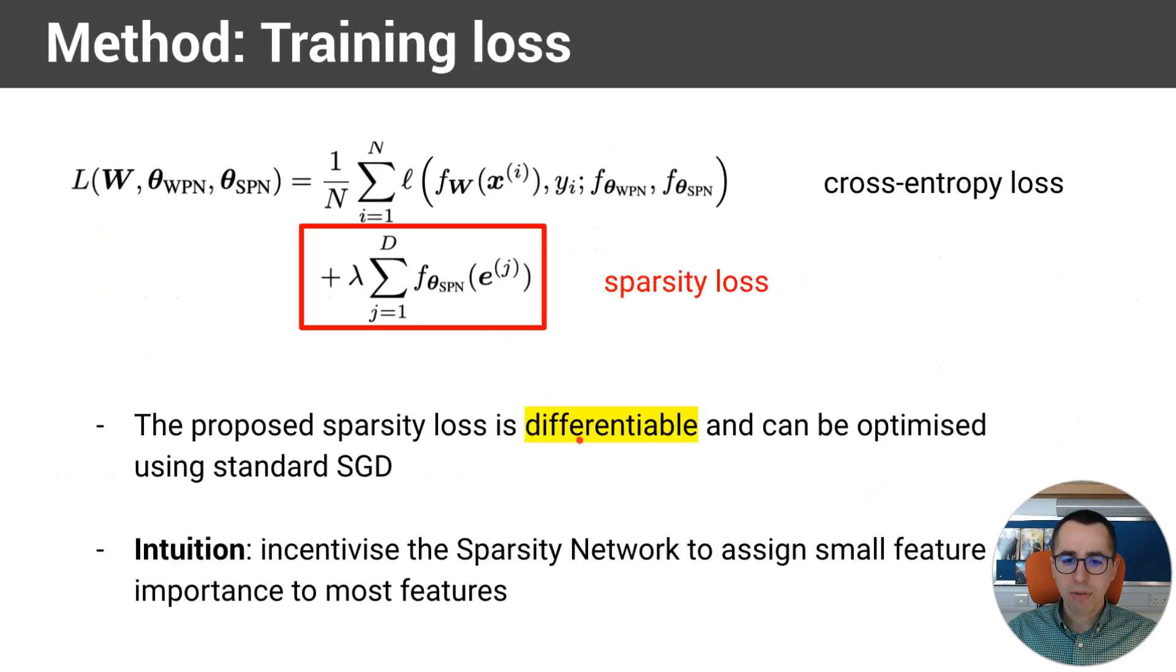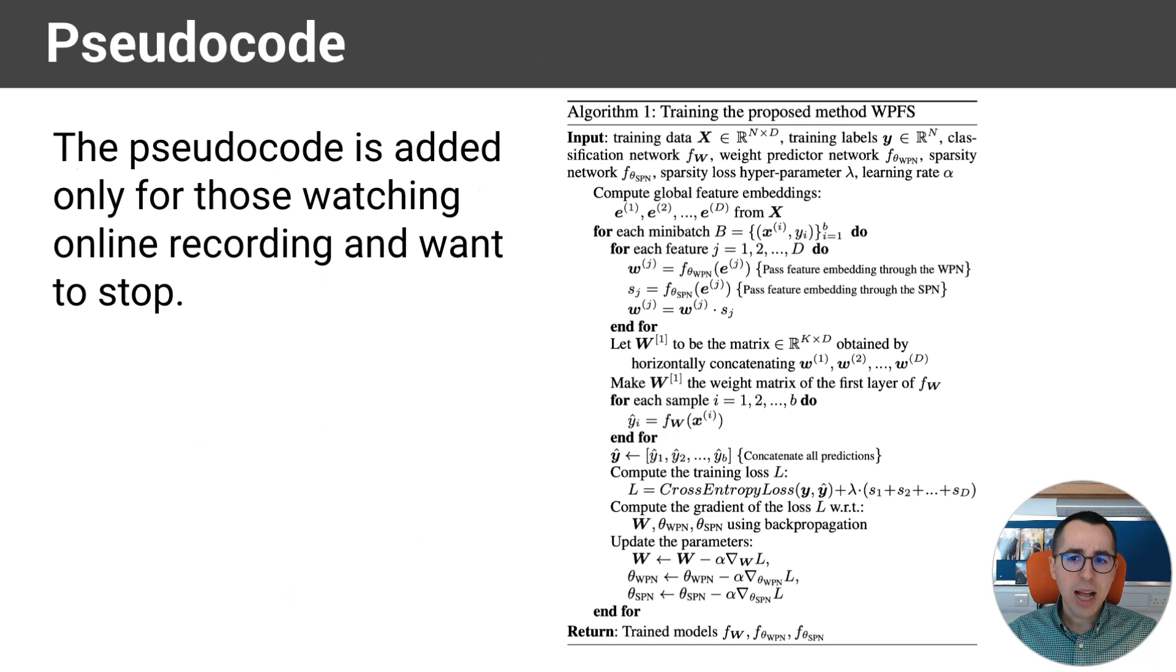This loss is differentiable because these feature importances are always positive, and they can't be 0 because it is a sigmoid activation. Intuitively, we incentivize the outputs of the sparsity network, which means the feature importances, to be 0 for most features. I'm attaching the pseudocode of the method for those interested in stopping, but it's not important, so I'm going to skip it.